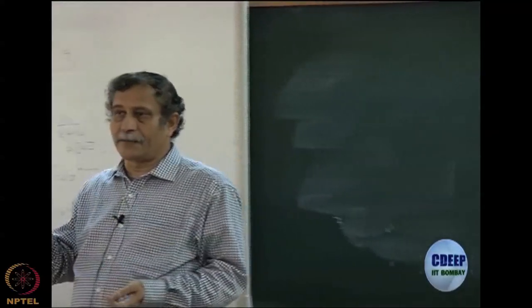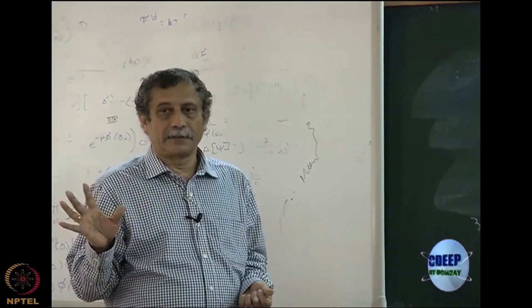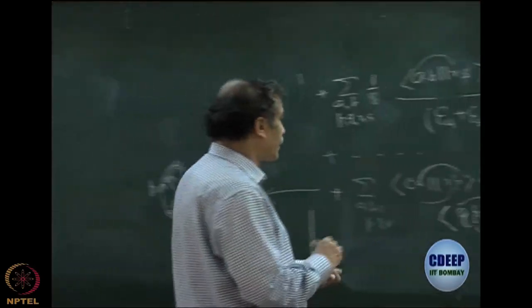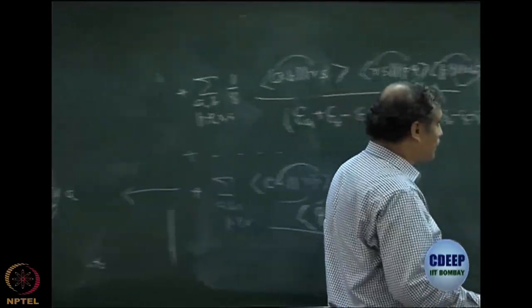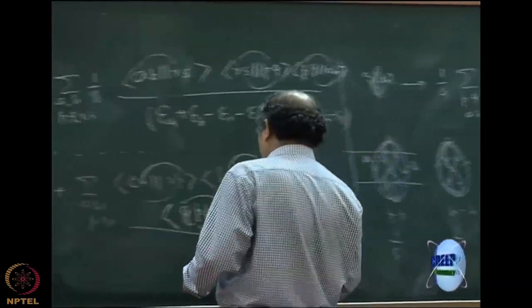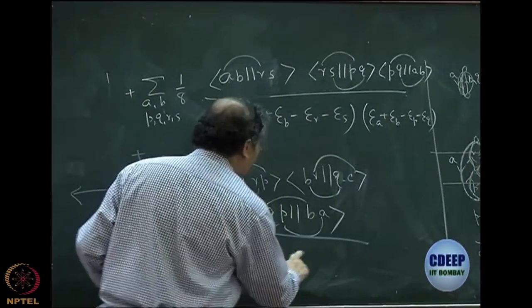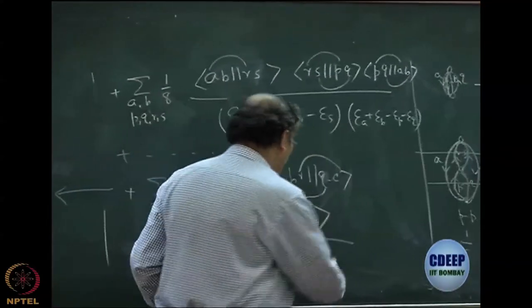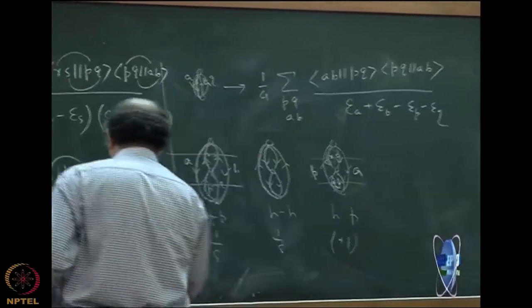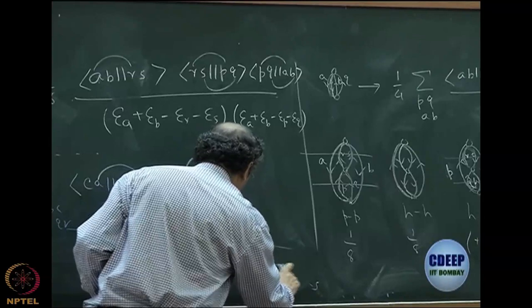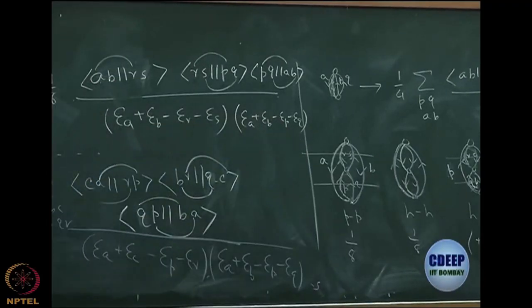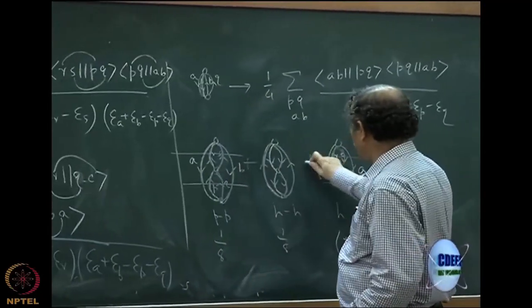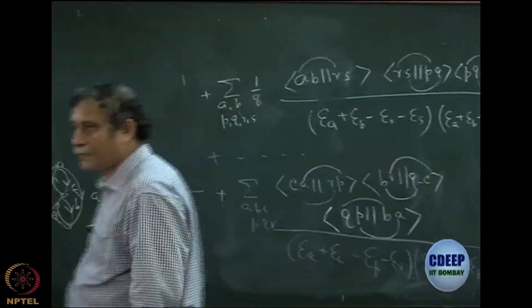That gives us the full algebraic expression. For the denominator, you have epsilon_A plus epsilon_C minus epsilon_P minus epsilon_R for one imaginary line cut, and then epsilon_A plus epsilon_B minus epsilon_P minus epsilon_P for another. You just keep track of your symbols — it is very easy once you see the lines. So MP3 is this diagram plus this diagram plus this diagram, which is why I have written plus, plus, plus.